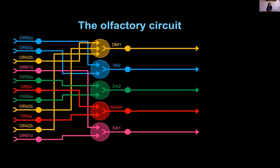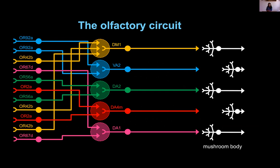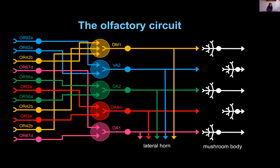The second-order neurons in the circuit are the projection neurons. They take information from the antennal lobe and project it to two different brain centers: the mushroom body, involved in associative memory, and also the lateral horn, which is involved mostly in innate, reflexively driven behaviors.